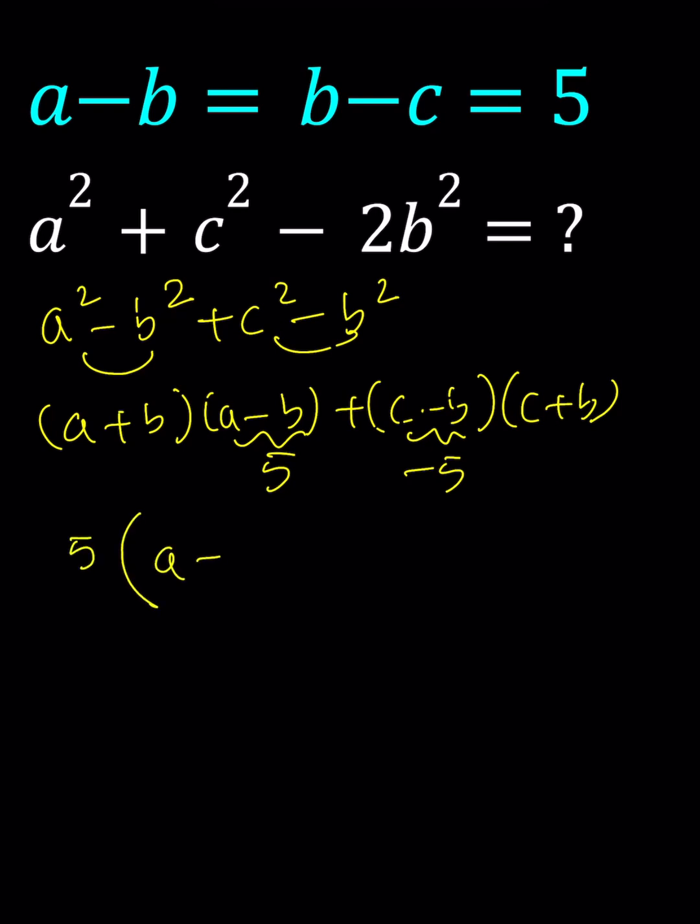We get a plus b plus negative 1 times c plus b. Let's distribute that. 5 times a plus b minus c minus b.